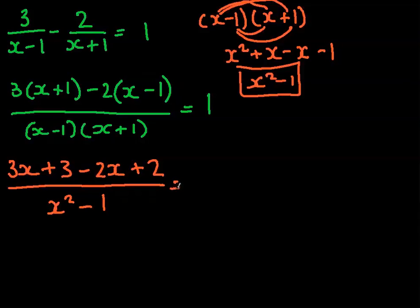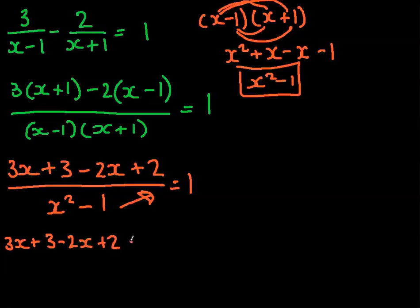Once we're here, we need to write the equals 1. So what we do here is we take this up the escalator onto the other side. So we would have 3x plus 3 minus 2x plus 2 equals basically 1 times by x squared minus 1, and that's obviously not going to make any difference, so it's basically x squared minus 1.